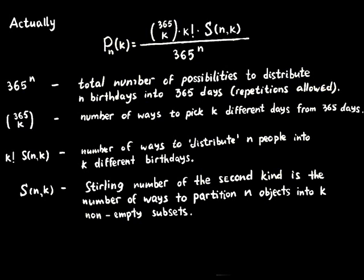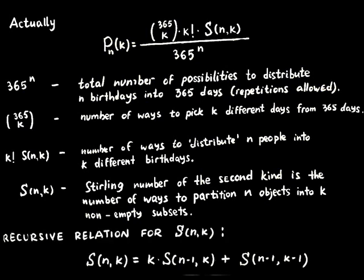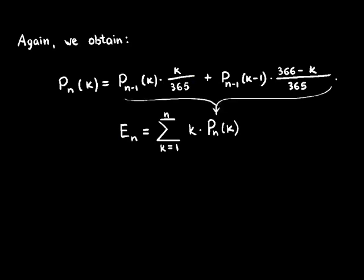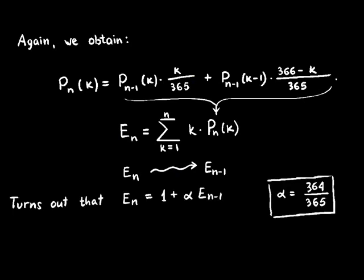Those Stirling numbers of the second kind satisfy a recursive relation of their own. And, guess what — you can use it to obtain the recursive relation for p_{n}(k). Writing down the expected value definition and plugging in the expression for p_{n}(k), what we want is to relate E_n to E_{n-1}. Skipping the tedious calculations, it turns out that E_n equals 1 plus alpha times E_{n-1}. But this relation is already familiar to us — we've seen it before, and it inevitably leads us to our solution.